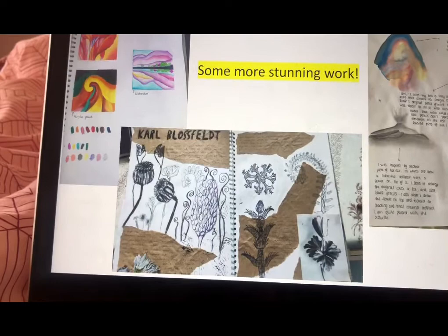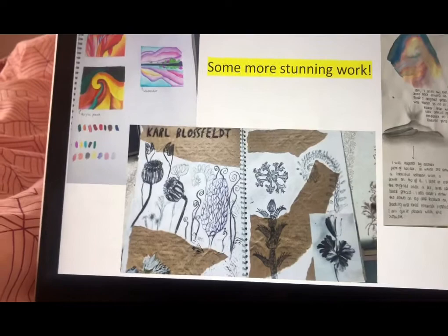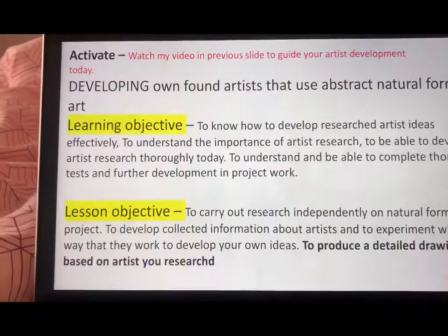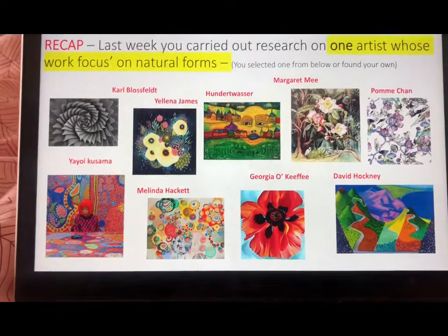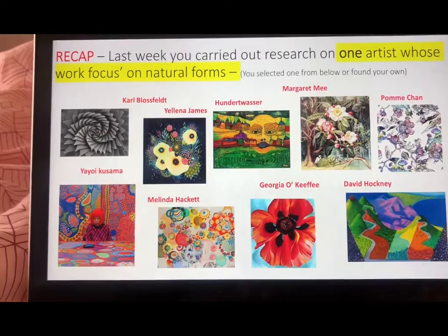So this is the kind of thing we should be now working from to develop further. You're effectively creating a second double page in your book with furthered developments and adding in your natural forms items. Please make sure you're watching this video. So you're developing your artist research. Just to recap, if you missed any of last week, you're selecting one of these artists or one of your own from last week to further develop the ideas and research.